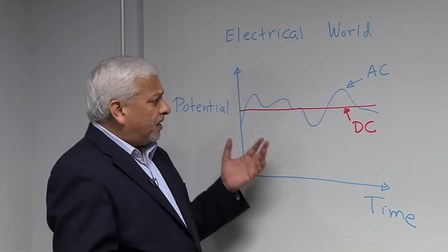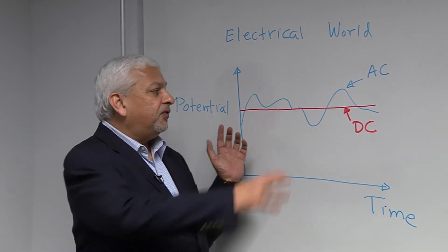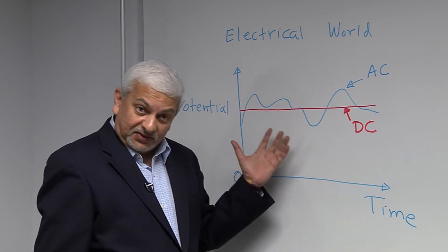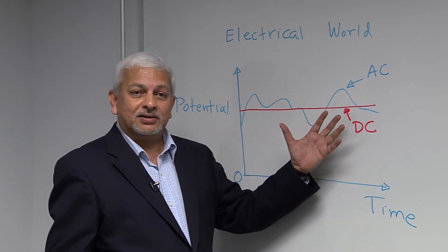So the question is, what is the importance of the DC value in this signal? If the information is all contained in the AC part, then the question is, does the average part matter? Does it mean anything?